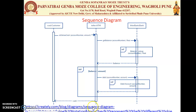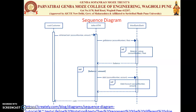This is the sequence diagram of an ATM transaction. For more details, you can refer to the link provided. In this session we have seen the activity diagram and the sequence diagram, which is part of the interaction diagram. The collaboration diagram will be covered in the next session. If you have any queries, please comment in the comment section. Thank you.